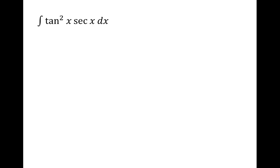The process that we're going to follow is to convert the tangent squared x part into secant. We can do that using the Pythagorean identity, which is tangent squared x plus 1 equals secant squared x. So that means that tangent squared x is equal to secant squared x minus 1.